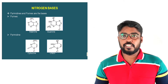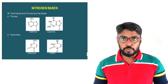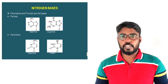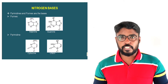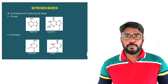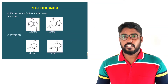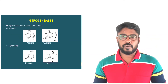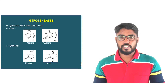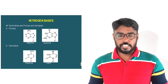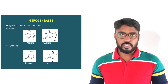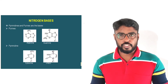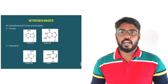There are two groups of nitrogenous bases present in RNA: purines and pyrimidines. In the case of purines, there are two bases — adenine and guanine. In the case of pyrimidines, there are cytosine and uracil. These are the nitrogenous bases present in RNA.